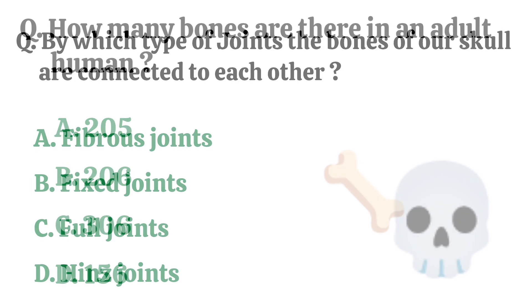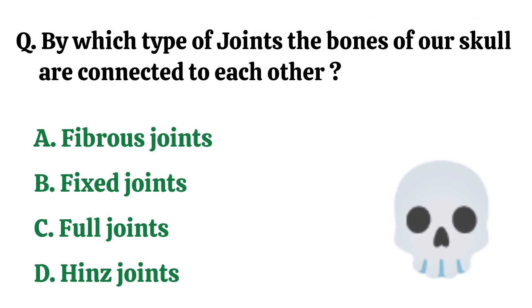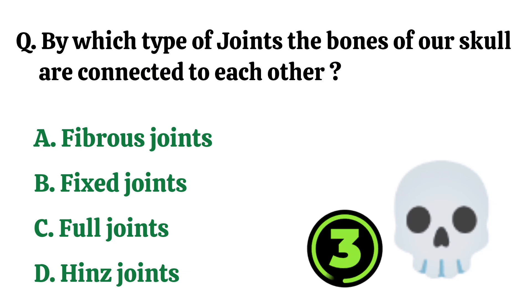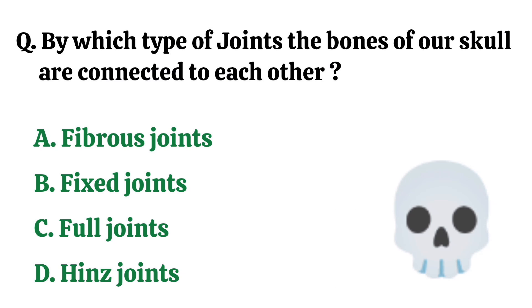By which type of joints are the bones of our skull connected to each other? The correct answer is option A. Fibrous joints.